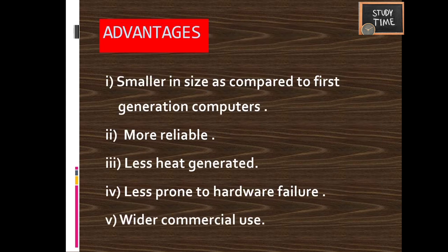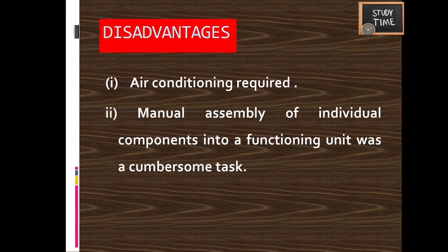Advantages of second generation computers: smaller in size compared to first generation, more reliable, generated less heat, less prone to hardware failure, and wider commercial use. Disadvantages: still produced heat so air conditioning was required, and manual assembly of individual components into functioning units was a very difficult task.